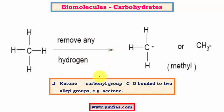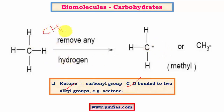Ketose has a carbonyl group where the carbonyl group is bonded to two alkyl groups. The best example is acetone, which is used in nail polish remover. Alkyl groups come from alkanes like methane and ethane. For example, methane is CH4, and when one hydrogen atom is missing it becomes CH3, which is called methyl — so methyl is the alkyl form of methane.